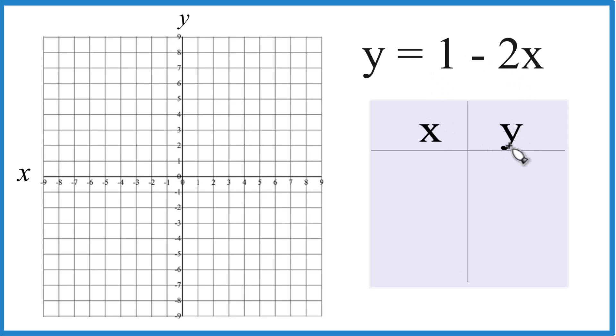So we're going to put values in for x, get a value for y, and then we'll graph that point. And that'll give us the line for y equals 1 minus 2x.